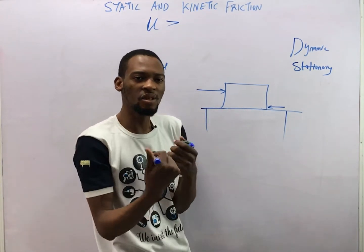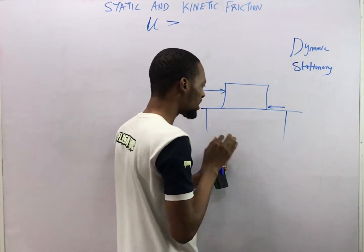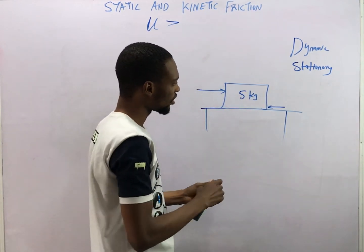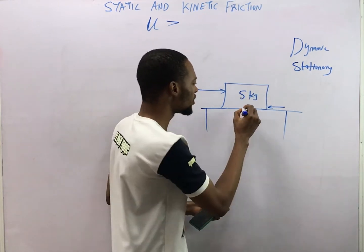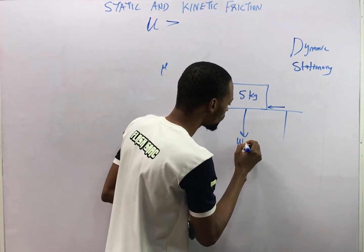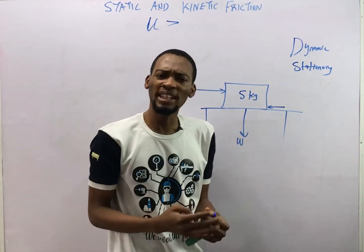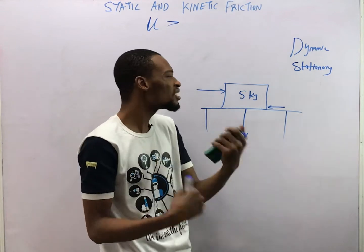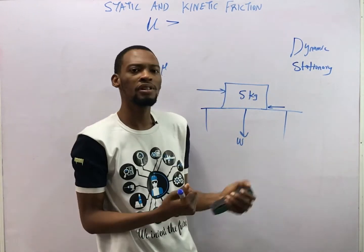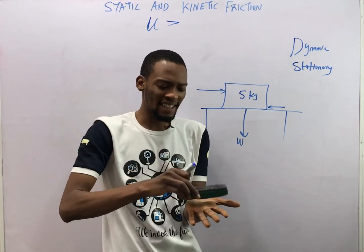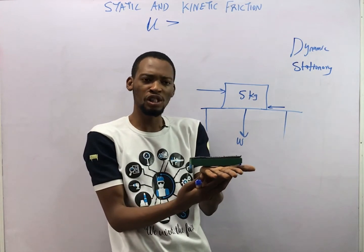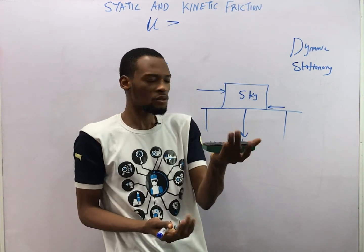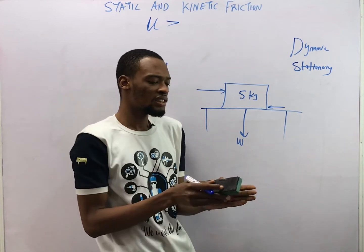Now let's look at the forces that act on a body. This is a block on a bench. Let's say the mass is 5 kg. The block applies a force downward — that is the weight W acting downward. As the block sits on the table, there is a reaction force from the table equal to the weight. Just as my hand holds an object because the force it applies equals the force applied back, anybody sitting on another body experiences an upward reaction force.